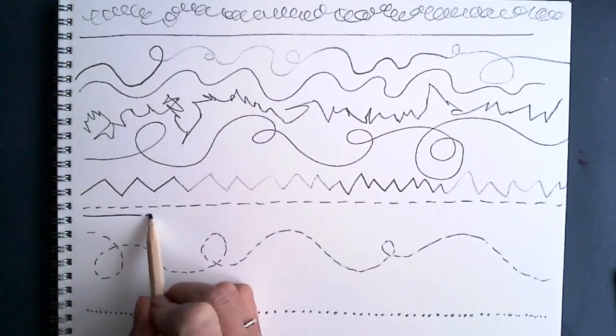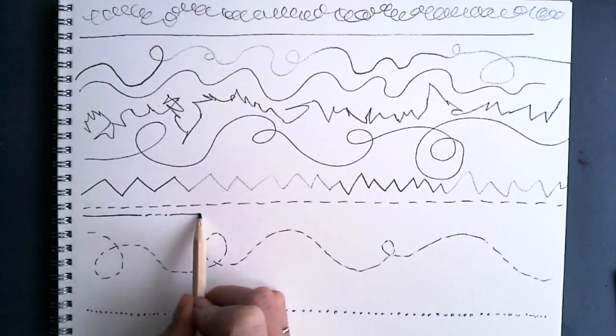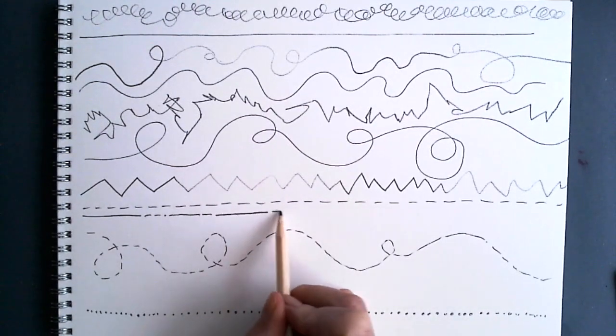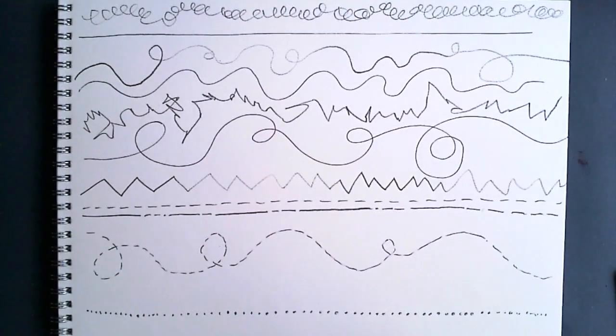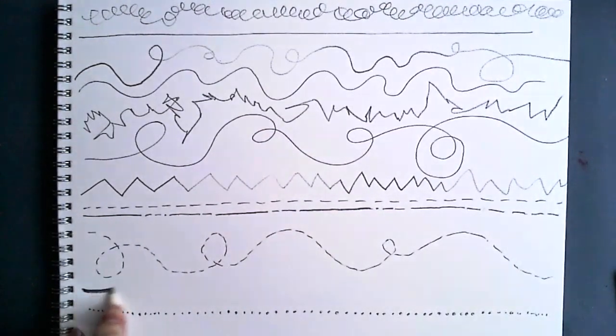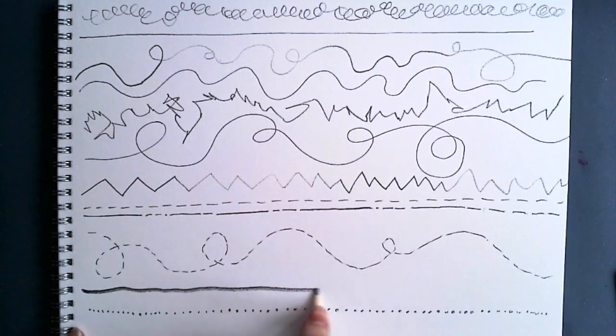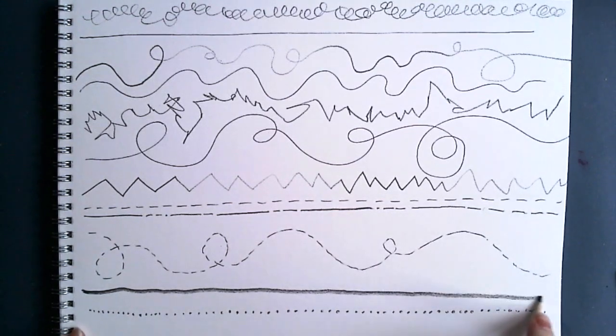Dots and dashes can be irregular—that means they are always changing, there is no repeat pattern. You can change the thickness of a line by turning your pencil on its side.